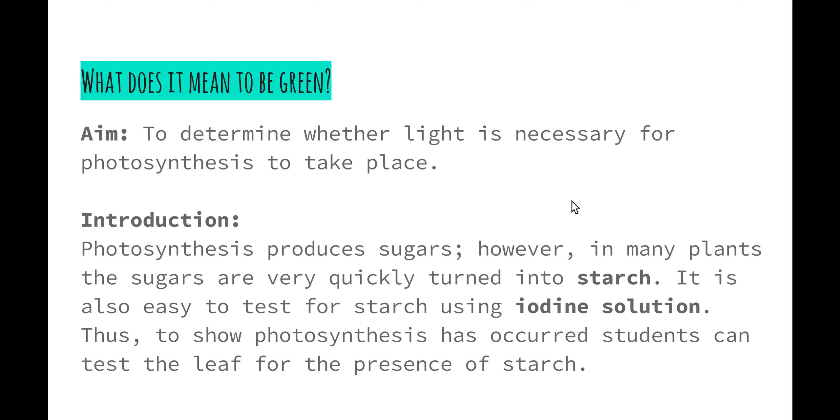We know it's easy to test for starch using iodine solution. From earlier in the Patterns in Nature topic, if we introduce iodine to a starch solution it goes from that yellowy brown color to a blue black color. Therefore, to show that photosynthesis has occurred we can test the leaves for the presence of starch using iodine.